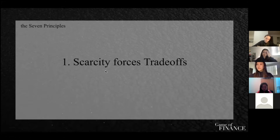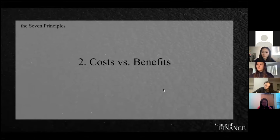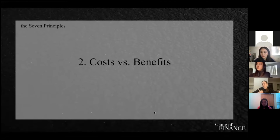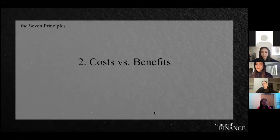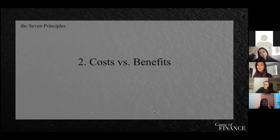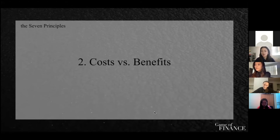Ella has a question. She asks: is scarcity forces trade-offs about having two options where the one you want isn't available, so you get the other? Or is it choosing between two things that are both available? The answer is that the second case — choosing between two available options — is actually the second principle, cost versus benefit. In principle one, you're being forced to get one thing because the other is not available due to scarcity. Most of the time people use substitutions.